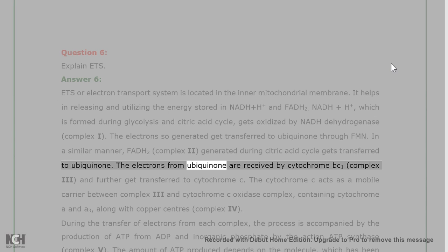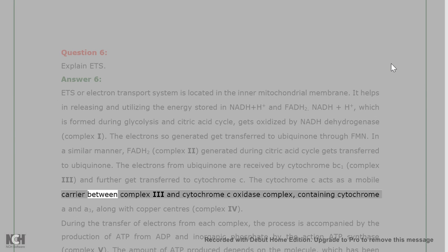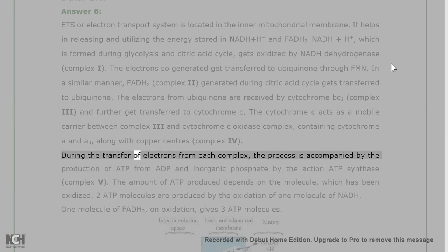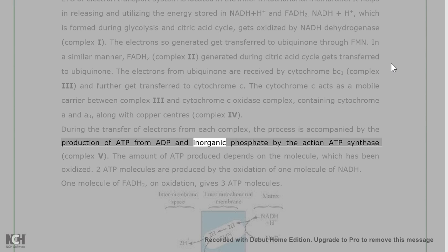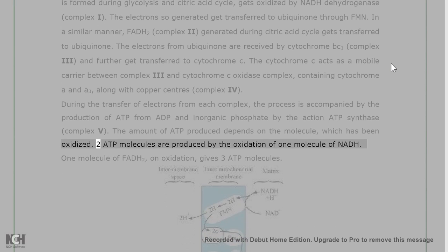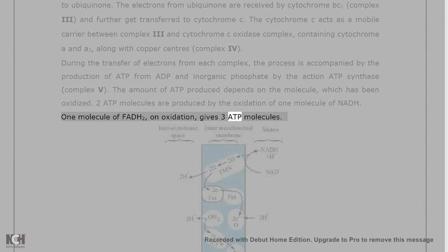Electrons from ubiquinone are received by cytochrome BC1 (Complex III) and further transferred to cytochrome C. Cytochrome C acts as a mobile carrier between Complex III and cytochrome C oxidase complex containing cytochrome A and A3, along with copper centers (Complex IV). During electron transfer at each complex, ATP is produced from ADP and inorganic phosphate by ATP synthase (Complex V). Oxidation of one NADH molecule produces 2 ATP molecules, while one FADH₂ molecule on oxidation gives 3 ATP molecules.